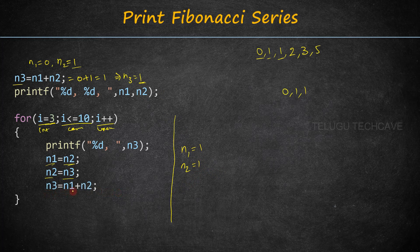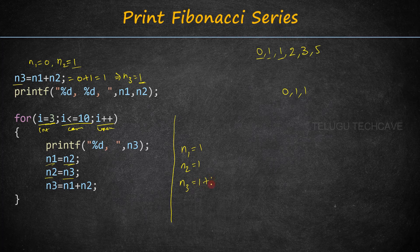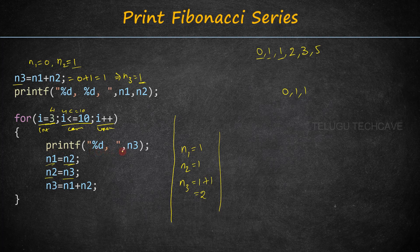Next, n3 is equal to n1 plus n2. So n3 equals 1 plus 1, which is 2. Then i is updated — i value becomes 4. Since 4 is less than or equal to 10, the condition is true. Now printf prints n3, which is 2.